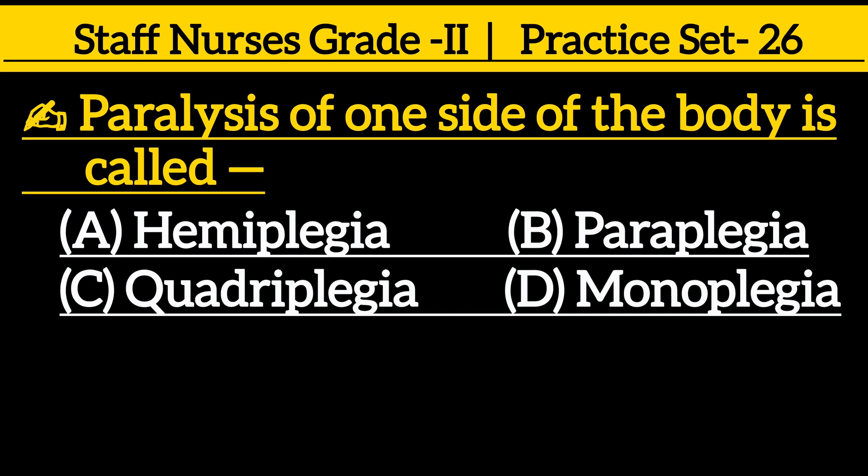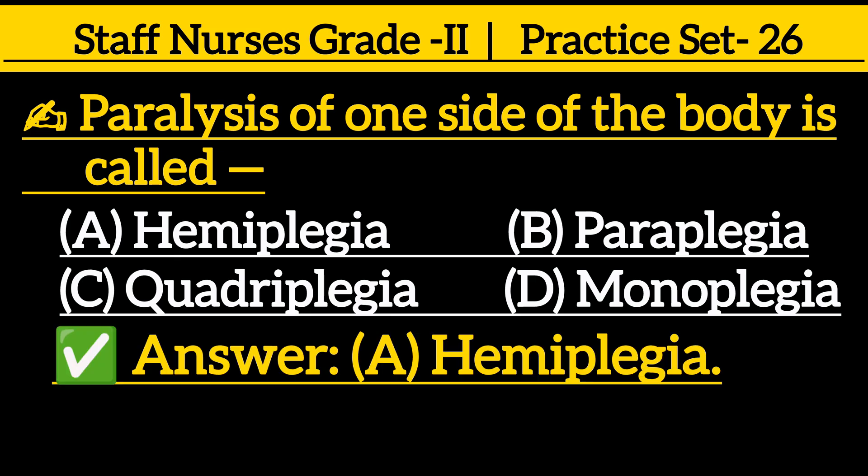Next question: paralysis of one side of the body is called — option A: hemiplegia, option B: paraplegia, option C: quadriplegia, option D: monoplegia. The correct answer is option A: hemiplegia.